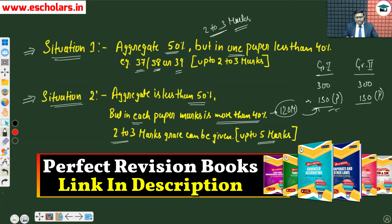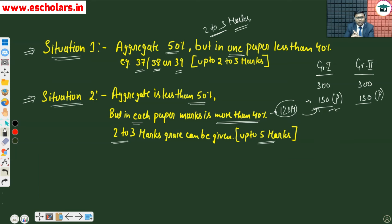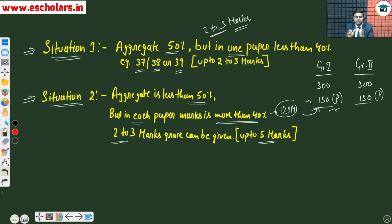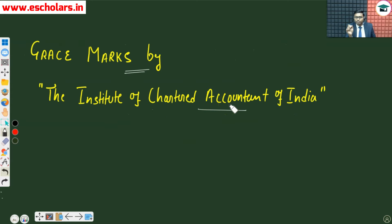The institute has not told us a fixed number — that they will always give two, three, or five grace marks in every case. This is based on the answer given in the press conference. Whether you get two, three, or five numbers depends on your specific situation and scenario. So if you are in these two situations, the institute can give you grace marks. This is the whole story of how the institute allows grace marks.